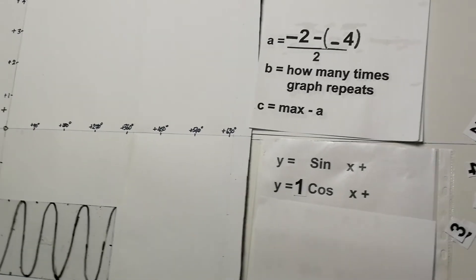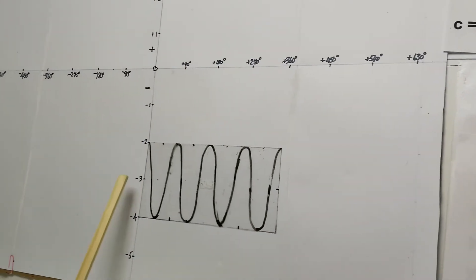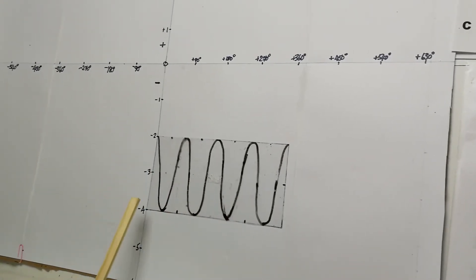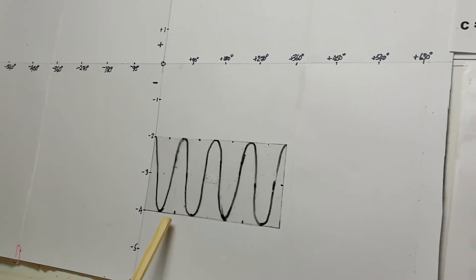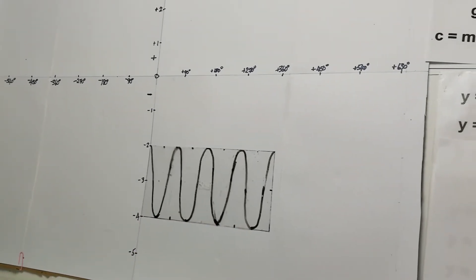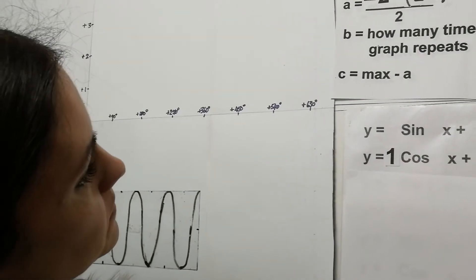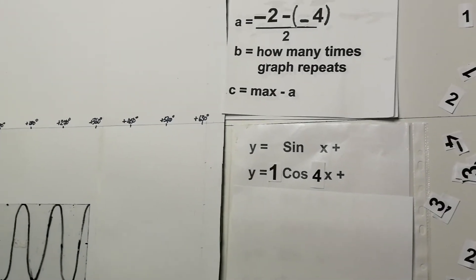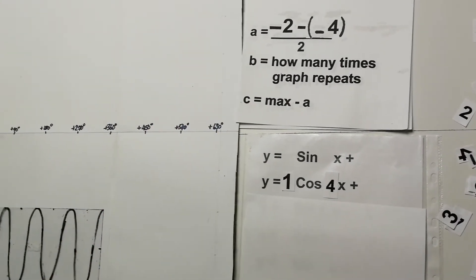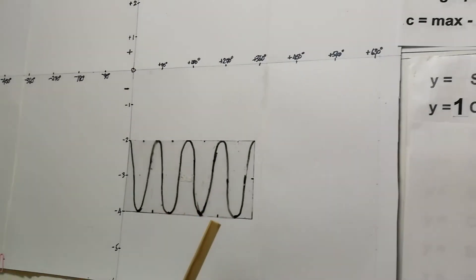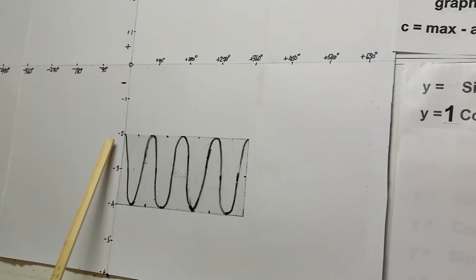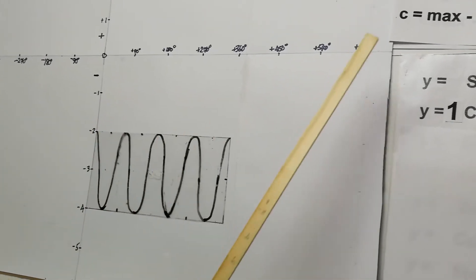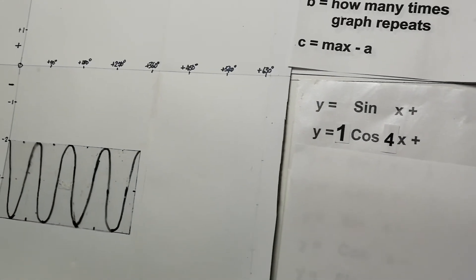The distance from the center to the top is just 1. For b: the graph touches the bottom 1, 2, 3, 4 times, so b = 4. For c: the maximum is negative 2 and we subtract the a value of 1, giving negative 2 − 1 = negative 3.